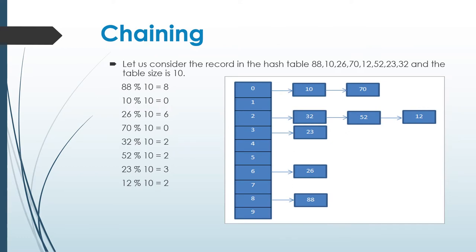Chaining — let us consider the records in the hash table: 88, 10, 26, 70, 12, 52, 23, and 32, with a table size of 10. 88 mod 10 equal to 8, so 88 is placed in the hash table at key value 8. 10 mod 10 equal to 0, so 10 is placed at key value 0. 26 mod 10 equal to 6, so 26 is placed at key value 6.